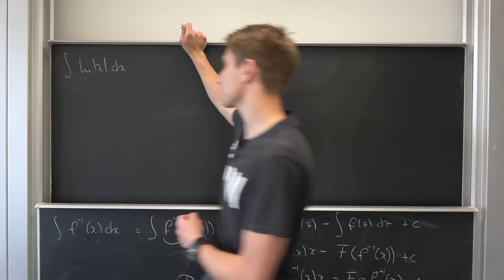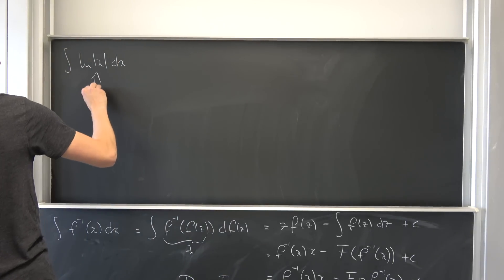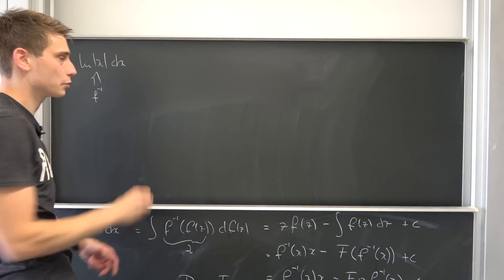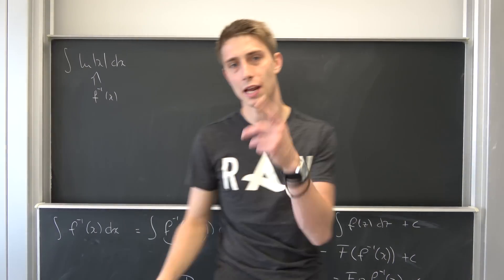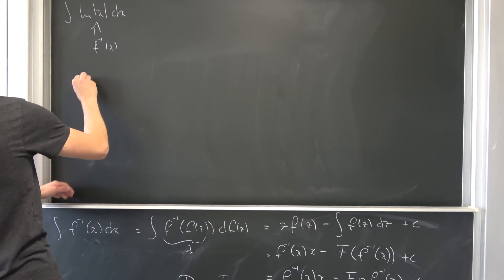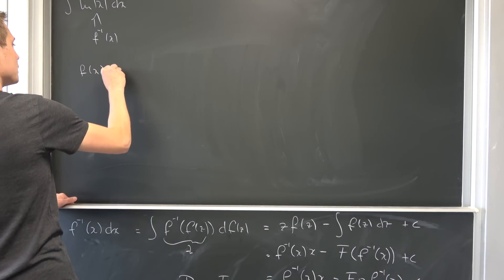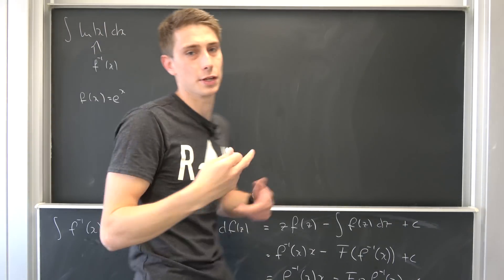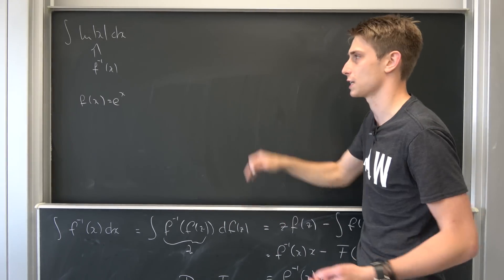And don't forget, ln x is supposed to be our inverse function with respect to x. But what's the inverse function of ln x? Just like I said in the beginning, it's e to the x. So f of x is just e to the x.